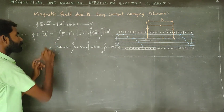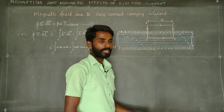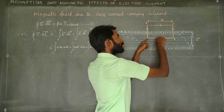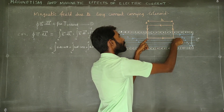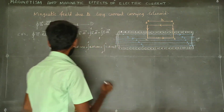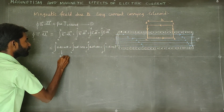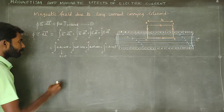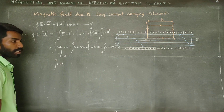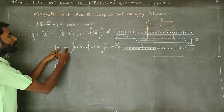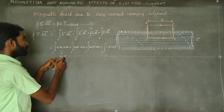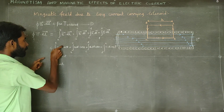For the AB segment, let's look at the angle. The direction of B-vector is along AB. The B direction and the dL direction are the same — they are parallel. Therefore theta equals zero, and the value of cos theta is 1. So for AB, the integral becomes simply integral of B dL, with cos theta equal to 1.